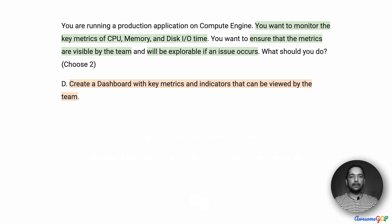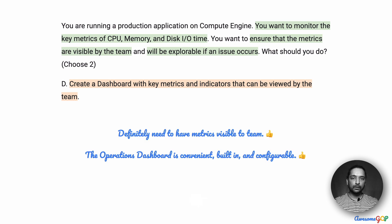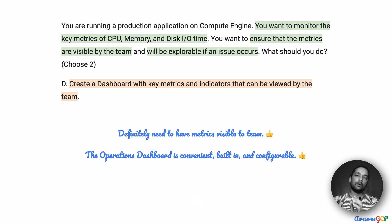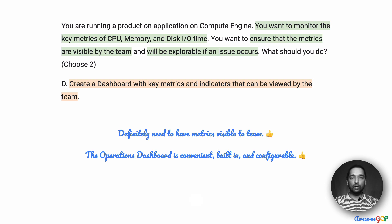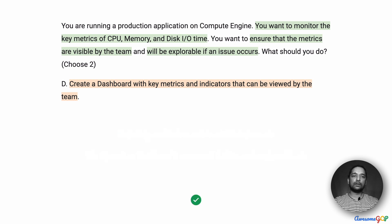Option D suggests creating a dashboard with key metrics and indicators that can be viewed by the team. This is definitely something we need — the requirement says these metrics should be visible to the team. Having a dashboard for all key metrics and indicators is exactly what we want. The operations dashboard is built into Google Cloud, it is convenient and configurable, and we don't have to write any extra code — we just choose a few parameters and the kind of graphs we want. So this is a definite yes, a much stronger yes than the previous options, and we are definitely going to choose D.